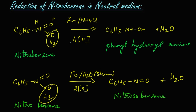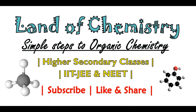Let's summarize these reactions. When nitrobenzene is reduced in the presence of neutral medium — that is zinc and ammonium chloride — we get phenyl hydroxylamine as a product. If we change the catalyst and use iron and steam instead, two hydrogen atoms get attached to this oxygen and leave as a water molecule, and we get nitroso benzene as the product. Thank you.